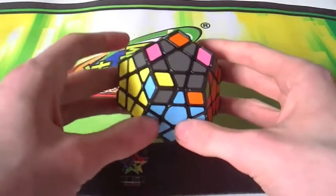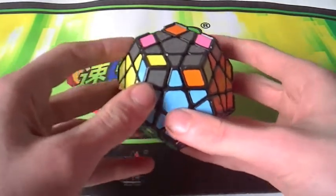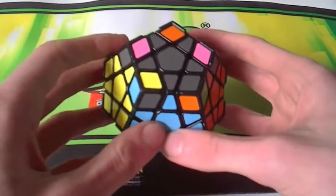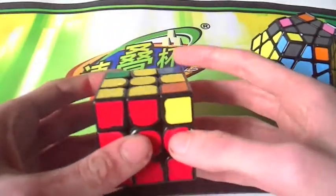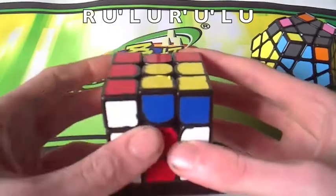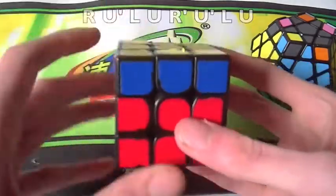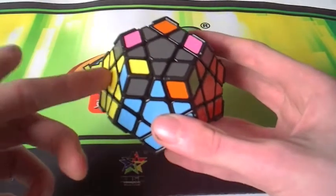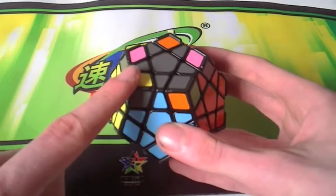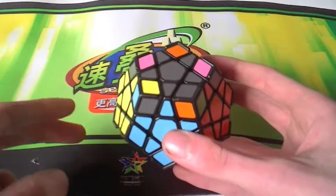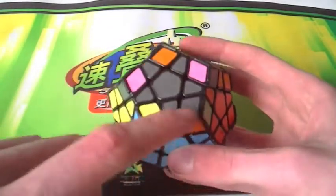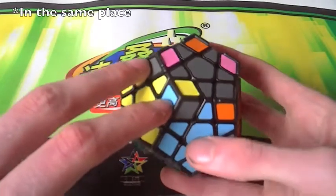Now we move on to corner permutation. This is a very simple algorithm. It is this, it is that. But the one thing we're changing here is instead of doing a U, we're doing a U2. Keeping the same direction. So what this does is it cycles these three corners here and leaves these two solved. So that's why in this case we have these two which are already solved.